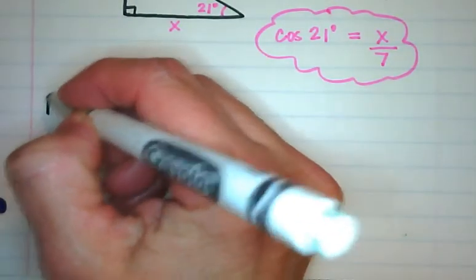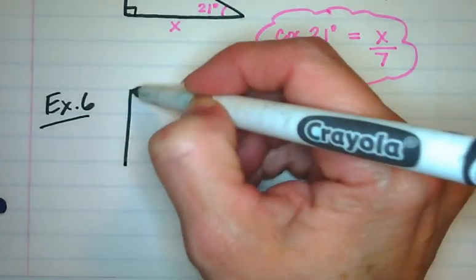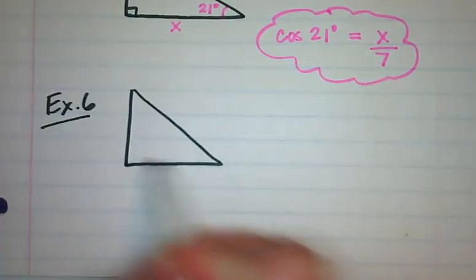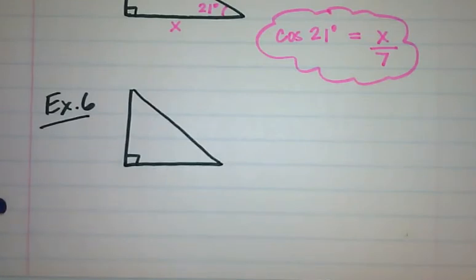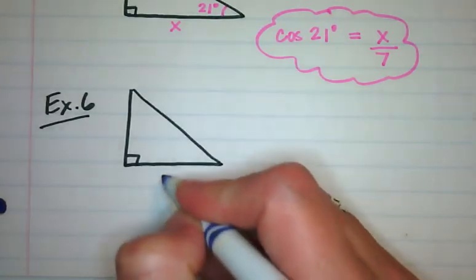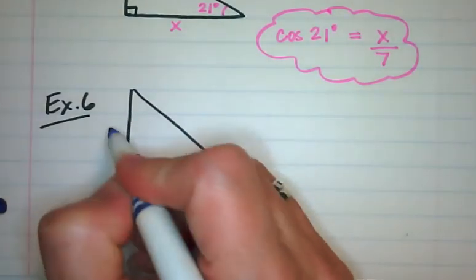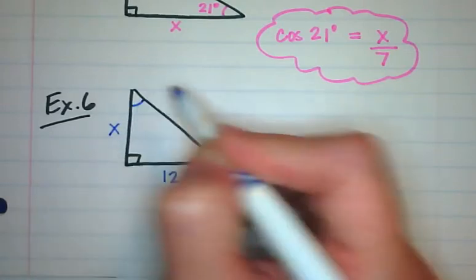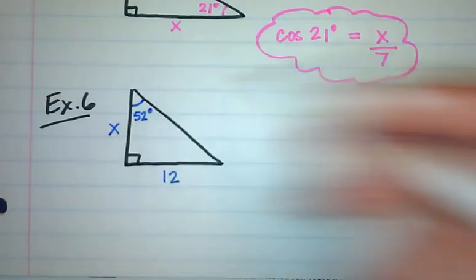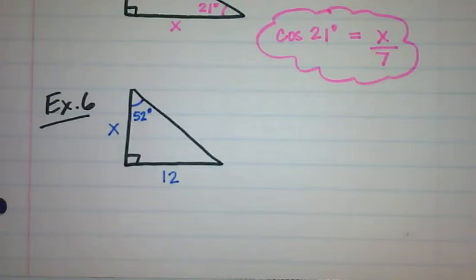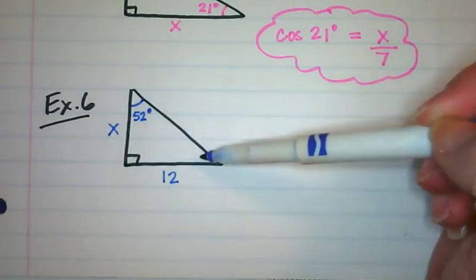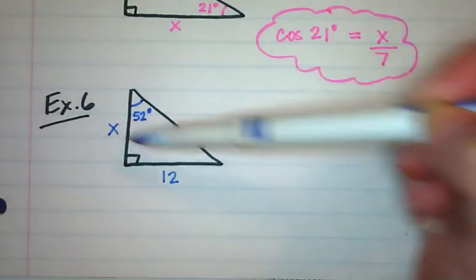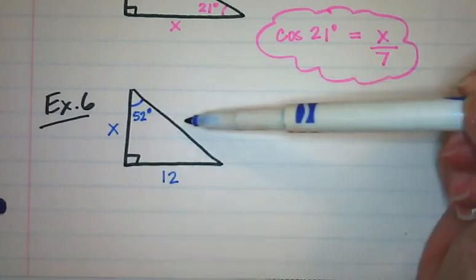Let's try example number 6. We have a right triangle where this side is 12, this side is x, and this angle is 52 degrees. We're going to write the trig function represented in this triangle. Since we know 52 degrees, we can subtract to find the other angle. And if we find side x, we can use the Pythagorean theorem to find the hypotenuse.